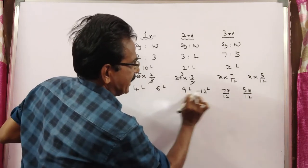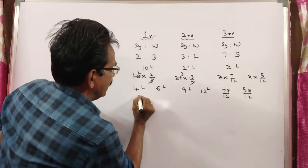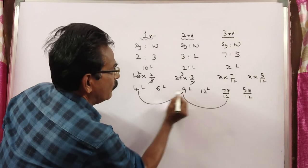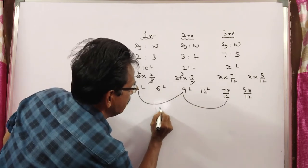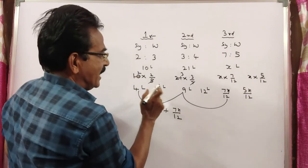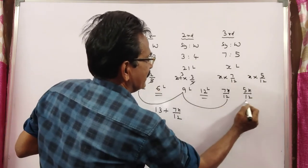4 plus 9 plus 7x by 12. This syrup. 4 plus 9, so 13 plus 7x by 12. And this water.